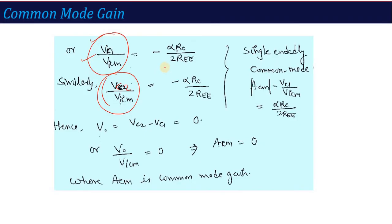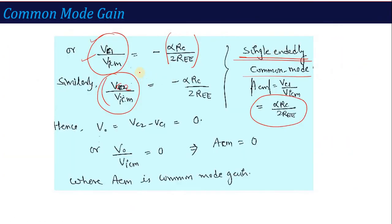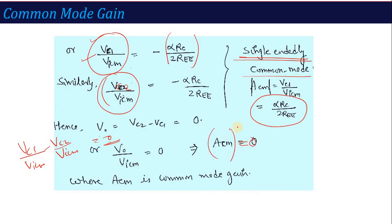When we consider single-ended mode, the common mode gain ACM equals alpha RC divided by 2REE. But when we consider the output voltage differentially — taking VC2 minus VC1 — then V0 equals VC2 minus VC1. Since VC1 and VC2 are both equal to minus alpha RC divided by 2REE times VICM, their difference is zero. So the total common mode gain is equal to zero when we consider dual-ended common mode gain — that is, when we take the differential output from both terminals.